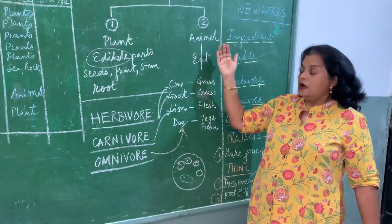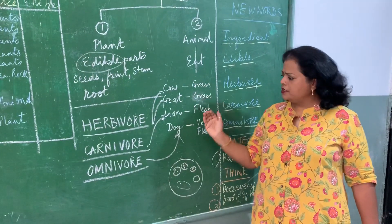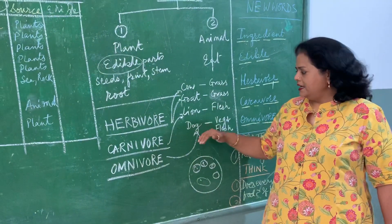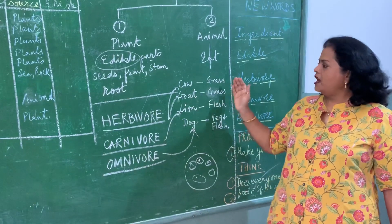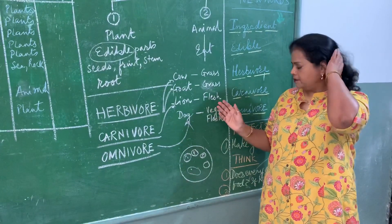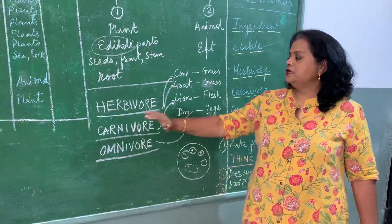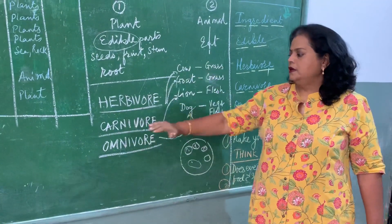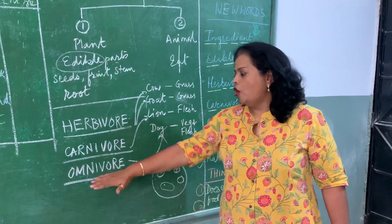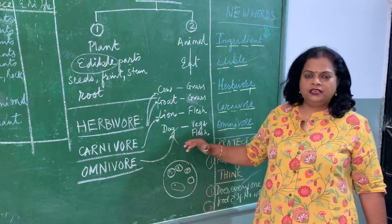Next we come to animals. Animals eat differently. We know that some animals — cow, goat, lion, dog, etc. So cow and goat eat grass. Lion eats fish. And dog eats vegetables or dal, as well as fish. So many animals are divided into herbivores — those who eat plants — carnivores — those who eat the flesh of animals, or meat-eating animals — and omnivores, which eat both plants as well as meat or fish. These are called omnivores.